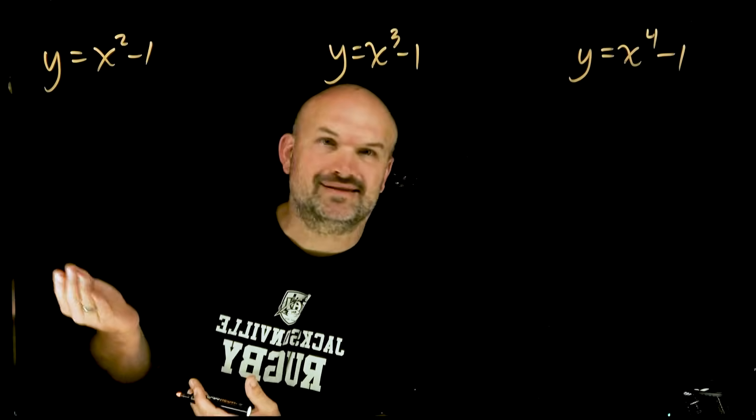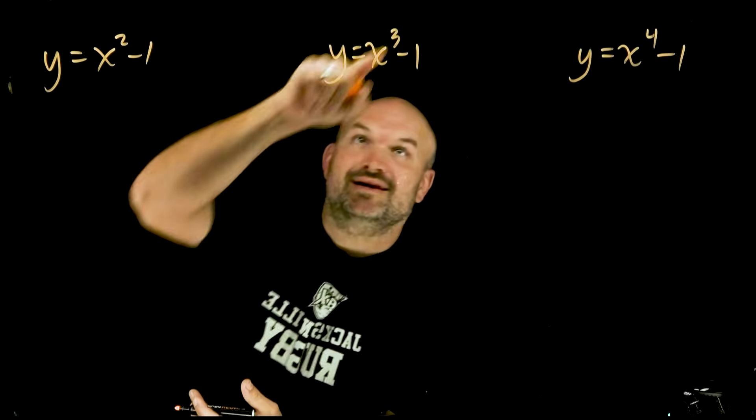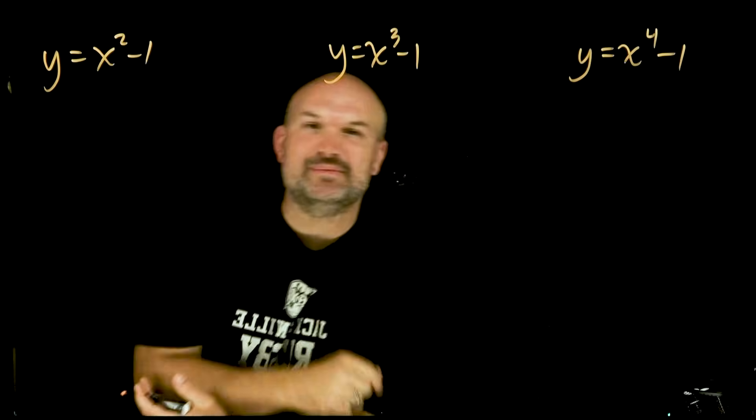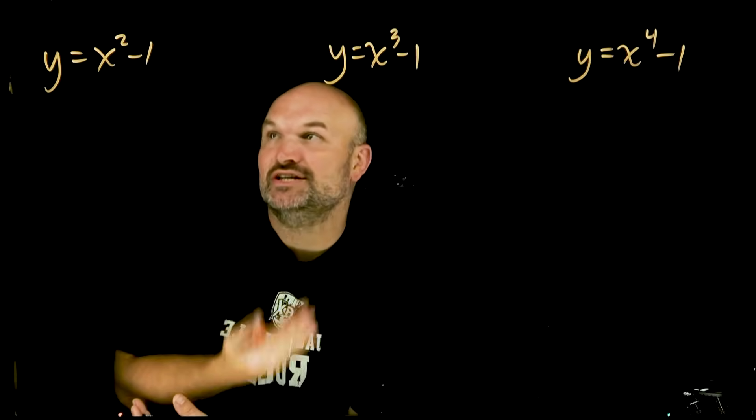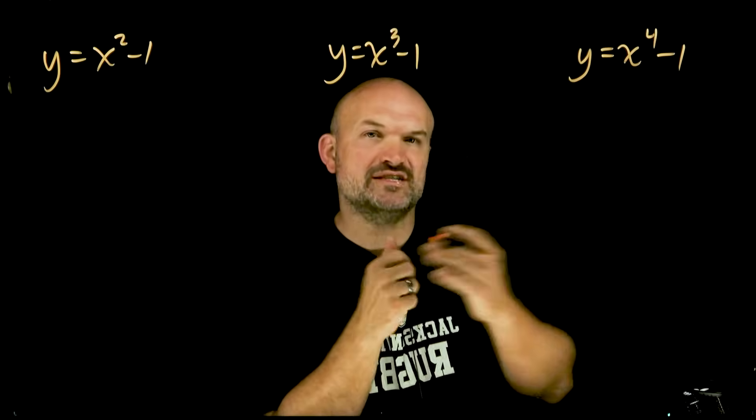Okay, so you're looking at these and you're like, they're basically almost the same. We have x squared, x cubed, x to the fourth, and they're all going to be minus one. But guess what? The technique that we're going to use to solve these are all going to be completely different.